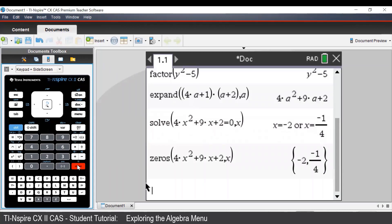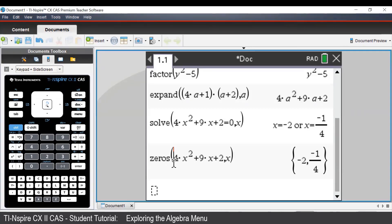The zeros command works similar to the solve command. The only difference here is that the output is given in a list, and the way the CAS reads this command is that we are solving the expression that we type in equal to 0 for x. So with the zeros command, the TI-Inspire assumes that we are solving that equal to 0.